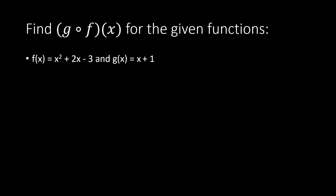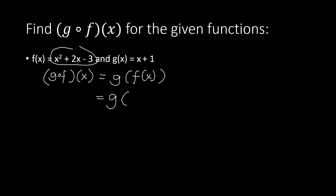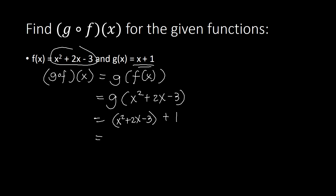Next example: find g∘f(x) for f(x) = x² + 2x − 3 and g(x) = x + 1. So g∘f(x) = g(f(x)). We replace f(x) with x² + 2x − 3. Going back to g(x) = x + 1, we replace x with a parenthesis and input x² + 2x − 3, giving (x² + 2x − 3) + 1 = x² + 2x − 2. So g∘f(x) = x² + 2x − 2.